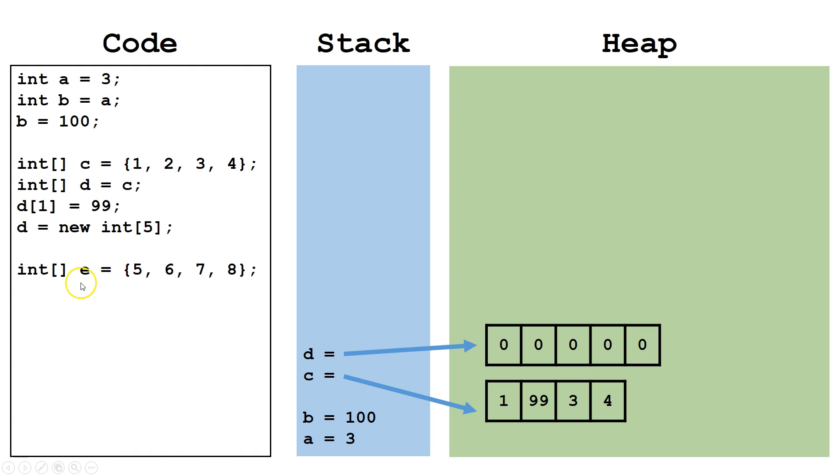Here, we are declaring another integer array E and having it point at a new object on the heap. Next, we create an integer array F and have it point to an identical object on the heap. Notice, even though the values are the same, they are separate objects on the heap.